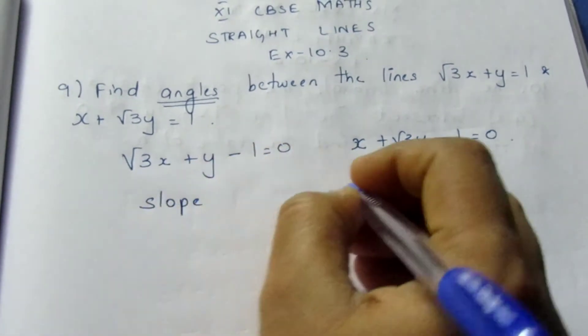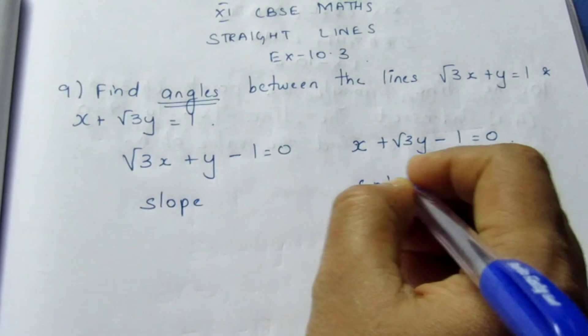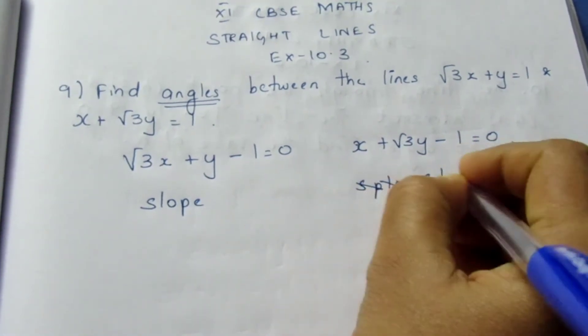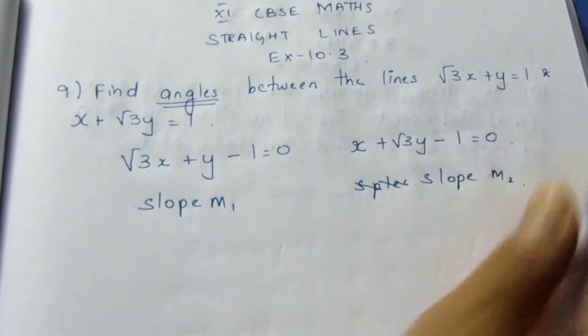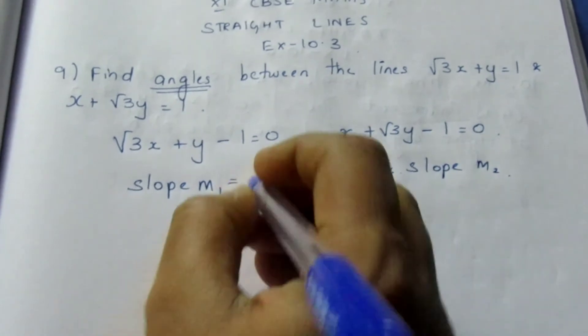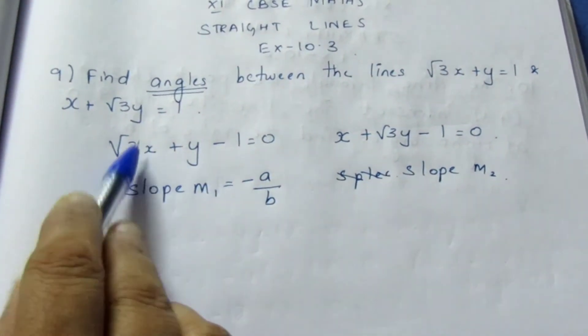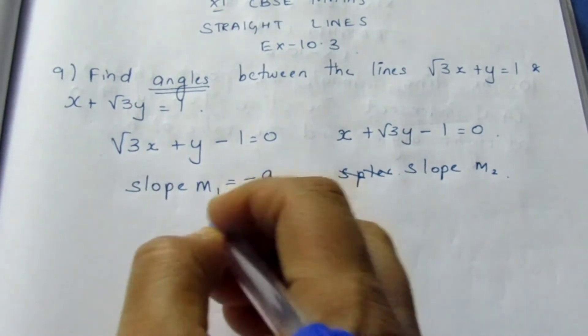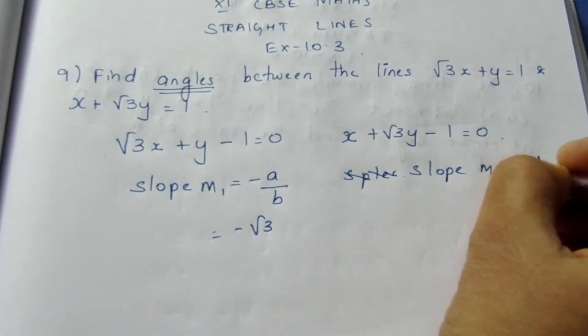Let me find the slope of these two lines, that is m1 and m2. Only if we see the slope, we can tell the angle. For taking slope, you can write it as -a/b. That is coefficient of x by the coefficient of y, which is -√3/1. Here it is -1/√3.